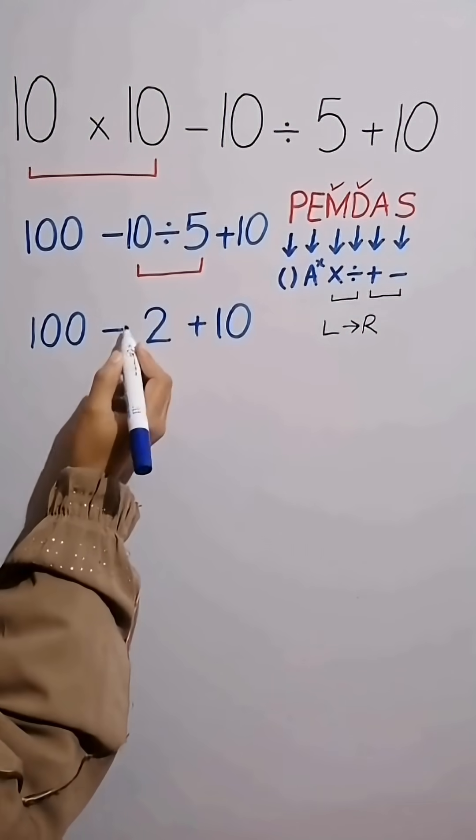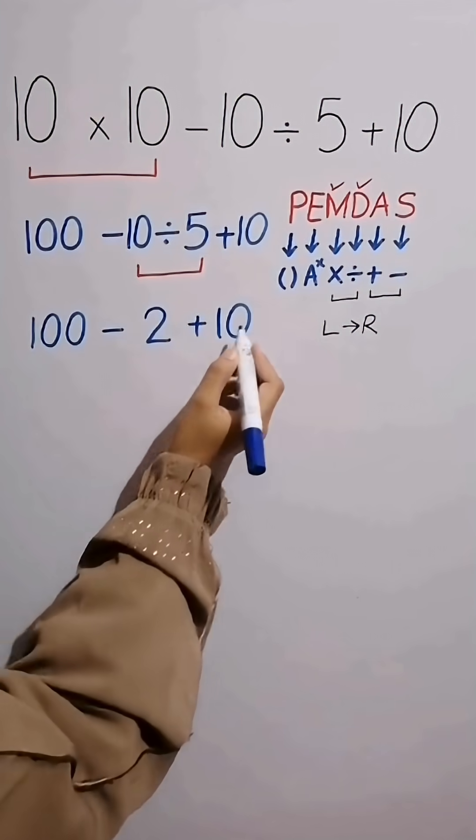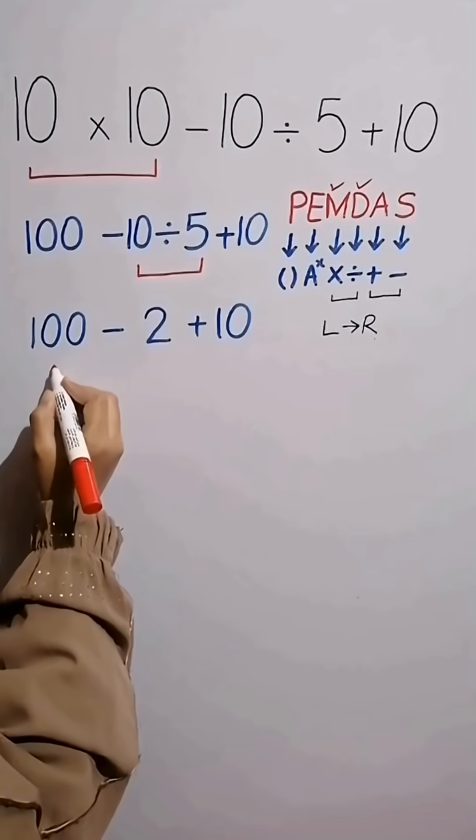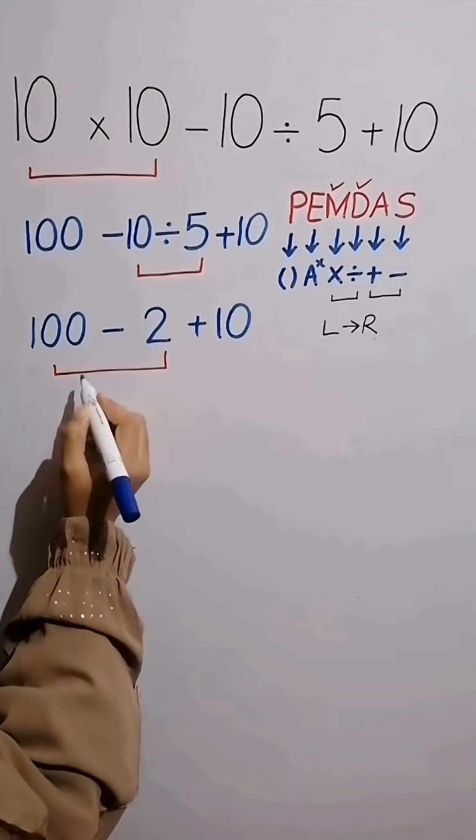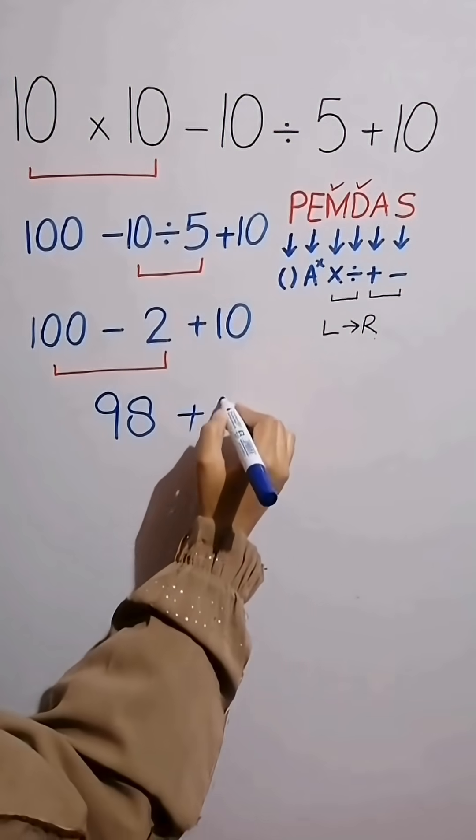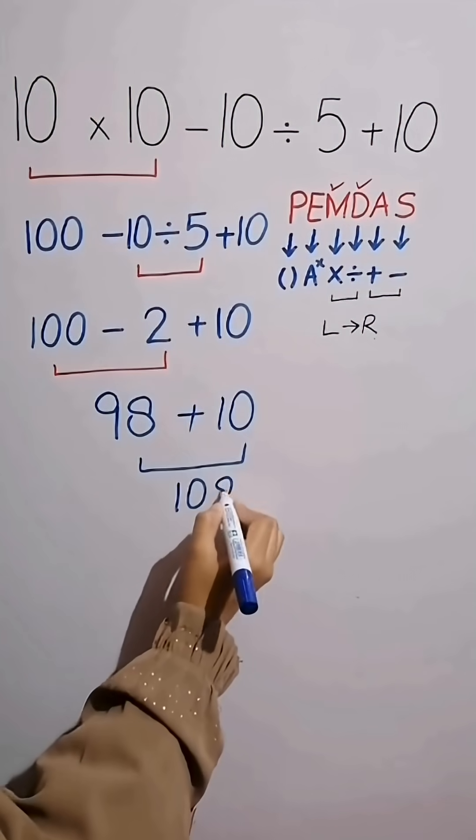Finally, we have subtraction and addition. First, we do subtraction because for addition and subtraction we work from left to right. So, we simplify this expression as 100 minus 2 equals 98 then plus 10. And the ultimate answer to this question is 108.